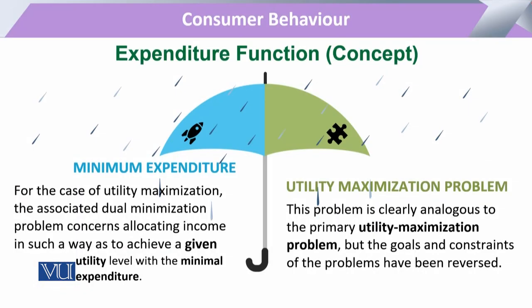Coming to the next point: there are two aspects. On one side, we work on utility maximization, and on the other side, we work on minimization of expenditure. Whether we do one or the other, working on either side leads to the same outcome. So utility maximization and the expenditure function are two sides of the same problem.